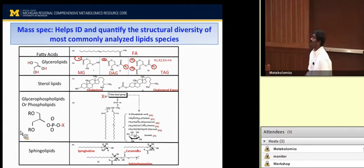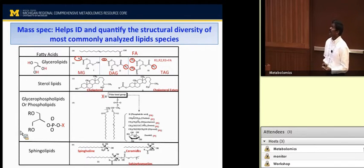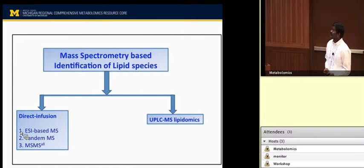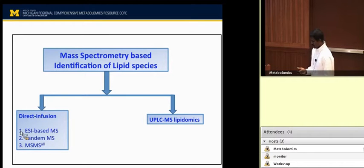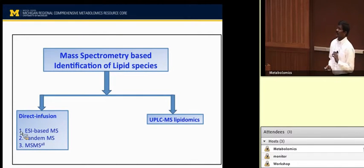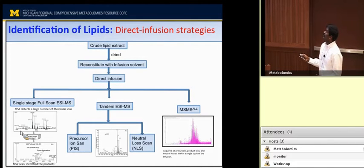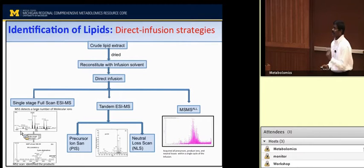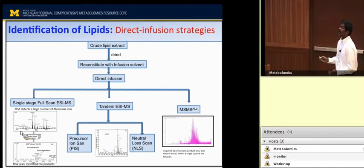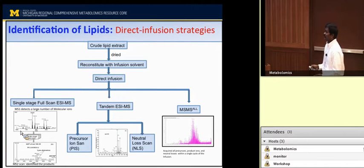Mass spectrometry-based technologies used routinely for the identification and quantification of lipids include direct infusion and LC-MS-based lipidomics. Direct infusion involves ESI-based MS, tandem MS, and MS-MS all. In direct infusion, the dried crude extract is reconstituted with infusion buffer and directly infused for either full scan MS, tandem MS, or MS-MS all. The single full scan MS detects a large number of molecular ions — the precursor ions. The MS2 scan provides the product ions of the molecular ion, from which we can identify which lipid class a compound belongs to.